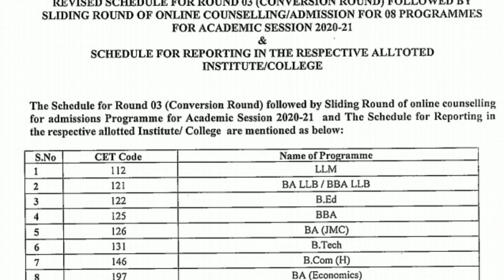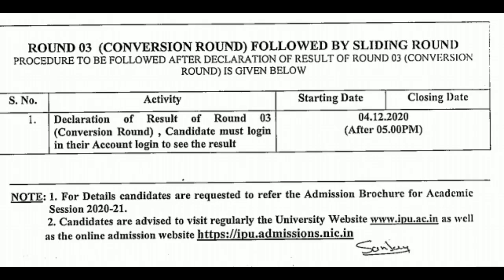First, we have to note that all the information in this video is related to these eight courses: LLM, BA LLB, BBA LLB, BADE, BBA, BA (BGMC), BTech, BCom Honours, and BA Economics. This information is for these eight courses, but at the end I'll also mention some additional circulars you need to check according to your specific course.